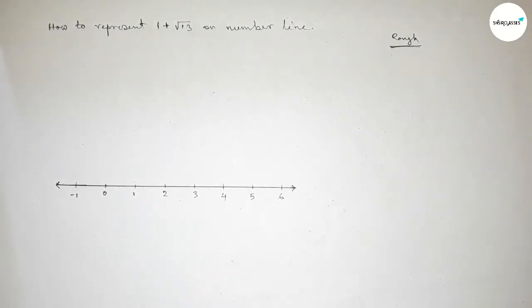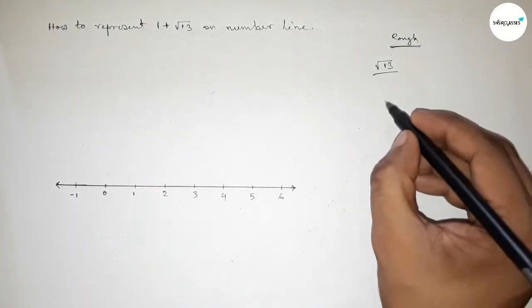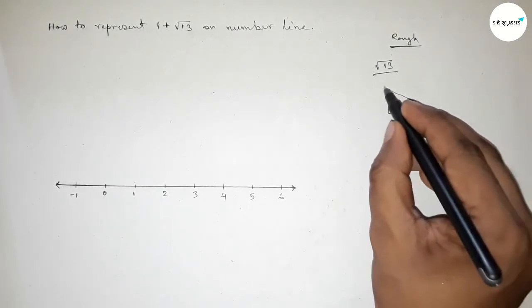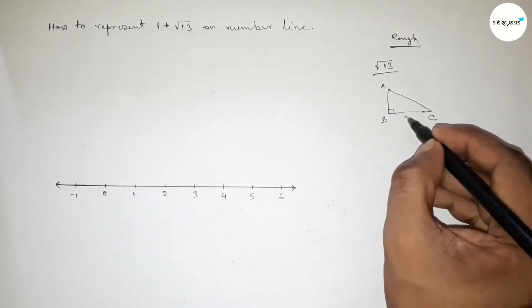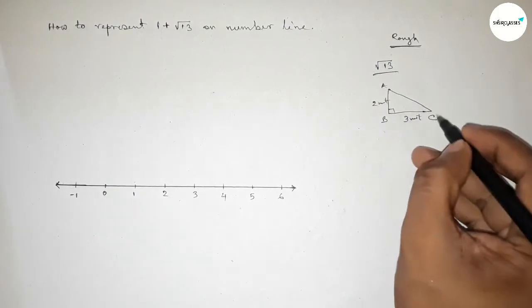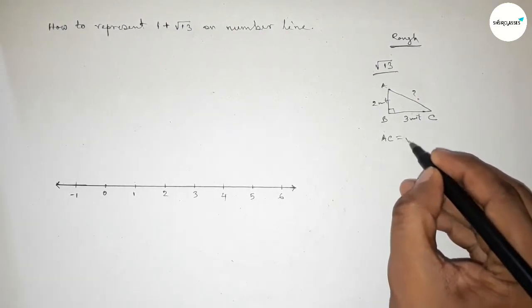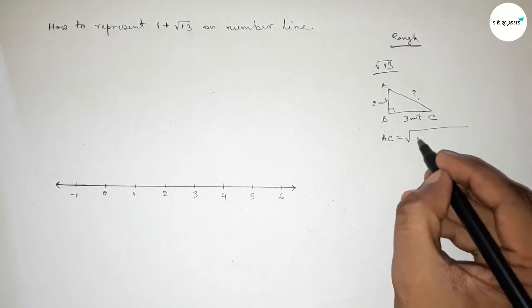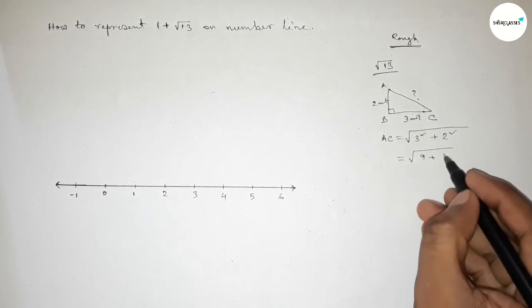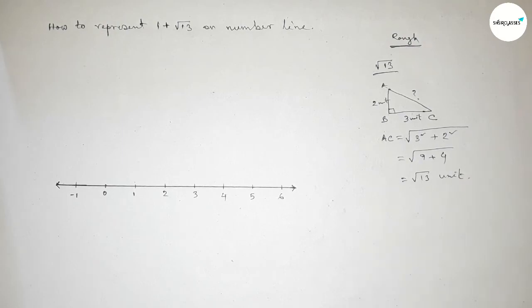Now roughly discussing some important calculation. First we have to represent root 13, so drawing a right angle triangle roughly with a 90-degree angle at B. Taking base AB equal to three units and height BC equal to two units. By Pythagoras theorem, hypotenuse AC equals root over three squared plus two squared, which is root over nine plus four, so AC equals root 13 units.